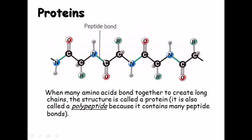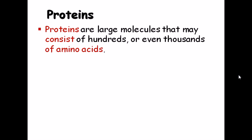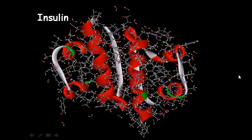The bond between the CO and NH group is called the peptide bond, formed between two amino acid sequences. Proteins are large molecules that may consist of hundreds or even thousands of amino acids. Proteins are important in cell structures, as enzymes that speed up reactions in the body, and as antibodies that fight infection. An example is insulin, which acts as a hormone and regulates the concentration of sugar in your blood to prevent problems caused by excess blood sugar.